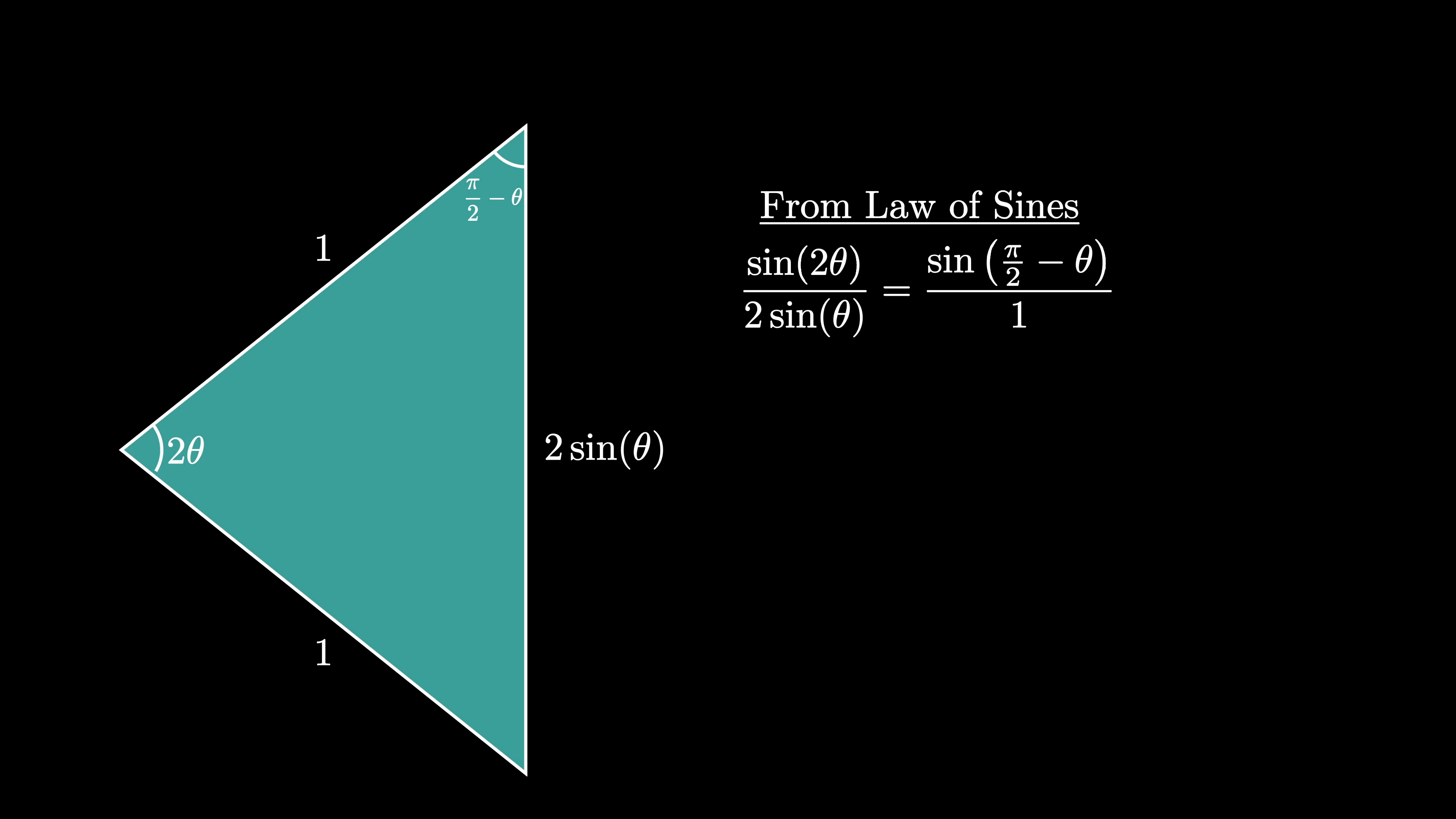This means that sine of 2 theta equals 2 sine of theta times the sine of pi over 2 minus theta, but the sine of pi over 2 minus theta is equal to the cosine of theta. Therefore we see that sine of 2 theta equals 2 times the sine of theta times the cosine of theta.